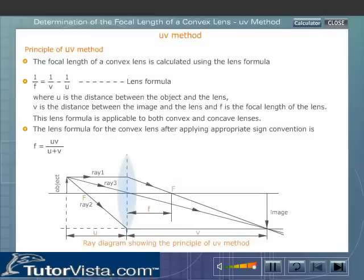The focal length of a convex lens is calculated using the lens formula. 1 by F is equal to 1 by V minus 1 by U is the lens formula.